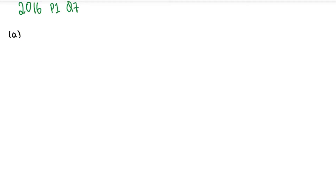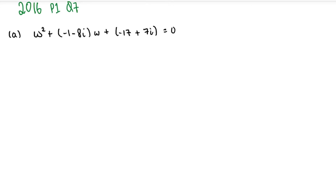Part (a) is asking you to verify that minus one plus five i is a root of the equation w² + (−1 − 8i)w + (−17 + 7i) = 0. Hence or otherwise, find a second root of the equation in Cartesian form p + iq, showing your working.